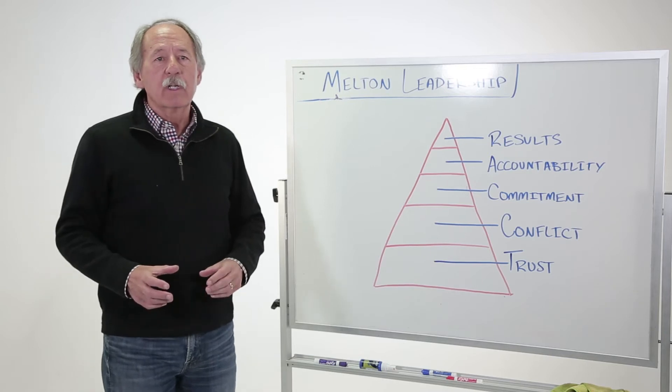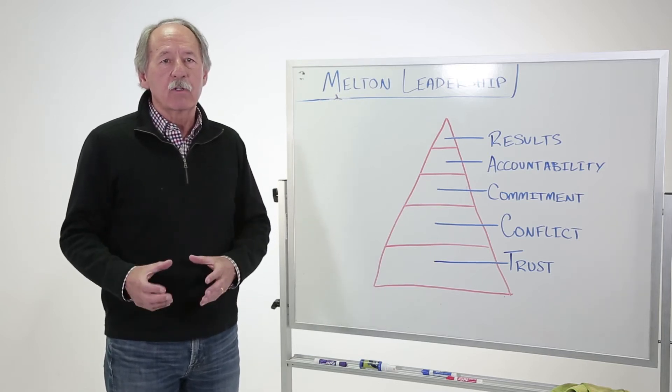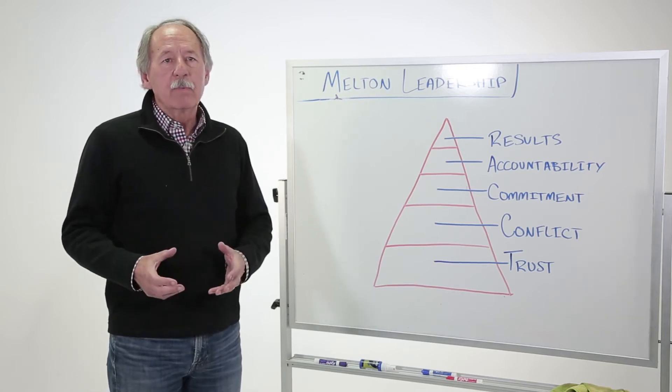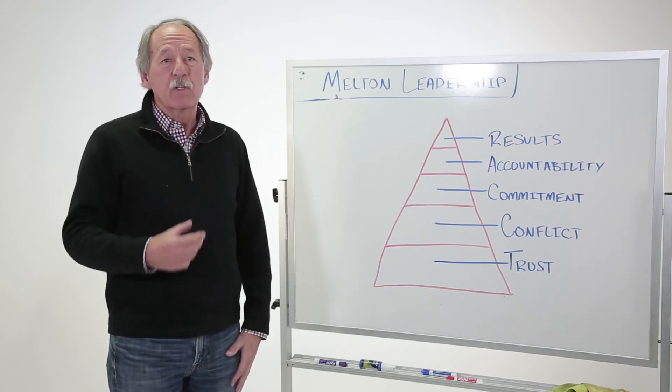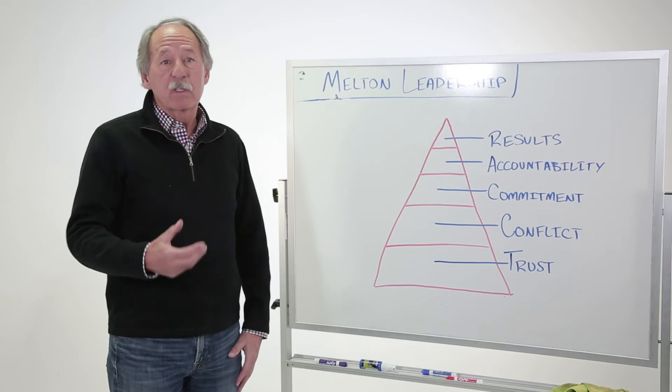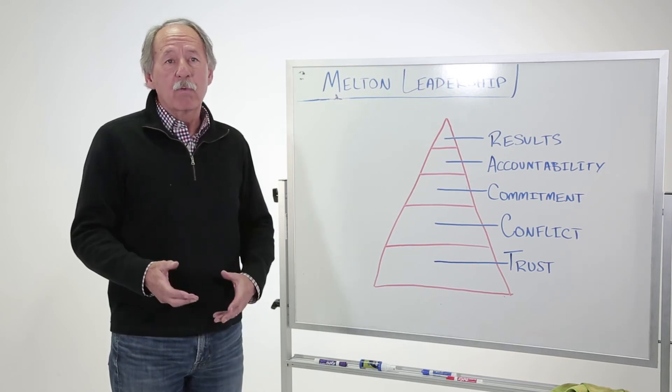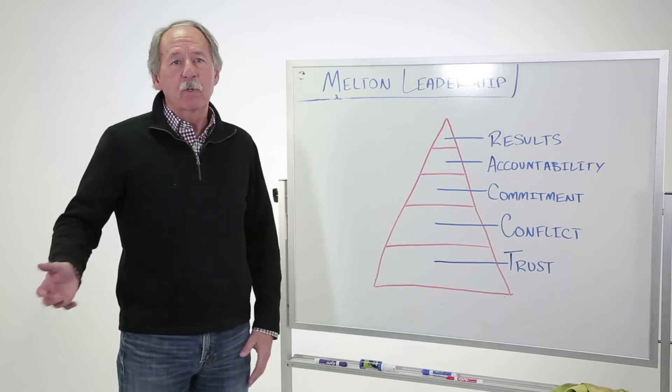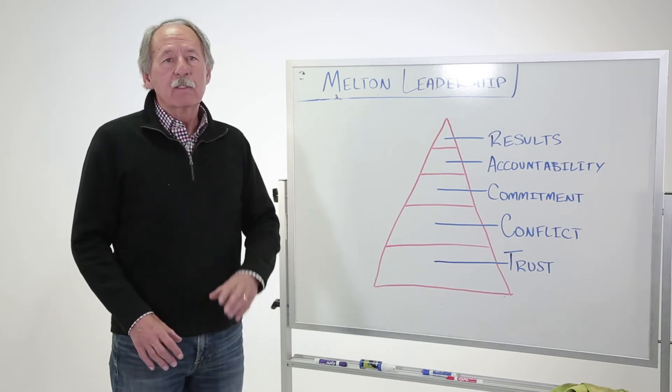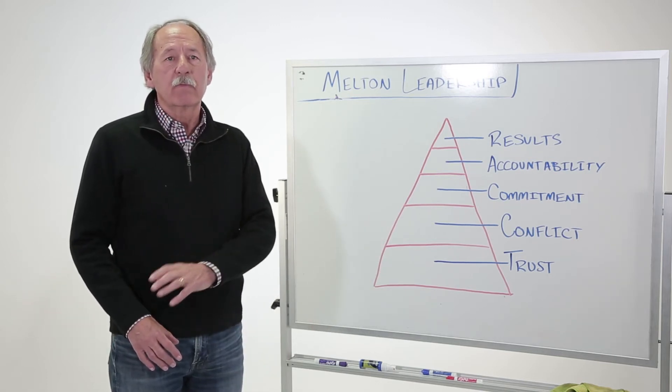But it's not just trust in general, it's what he calls vulnerability trust. And in vulnerability trust, it means that you are able and the people on your team are able to say what they're really thinking. One of the overriding principles of this and why you would even want a team as opposed to just a bunch of people is that the whole is greater than the sum of its parts.